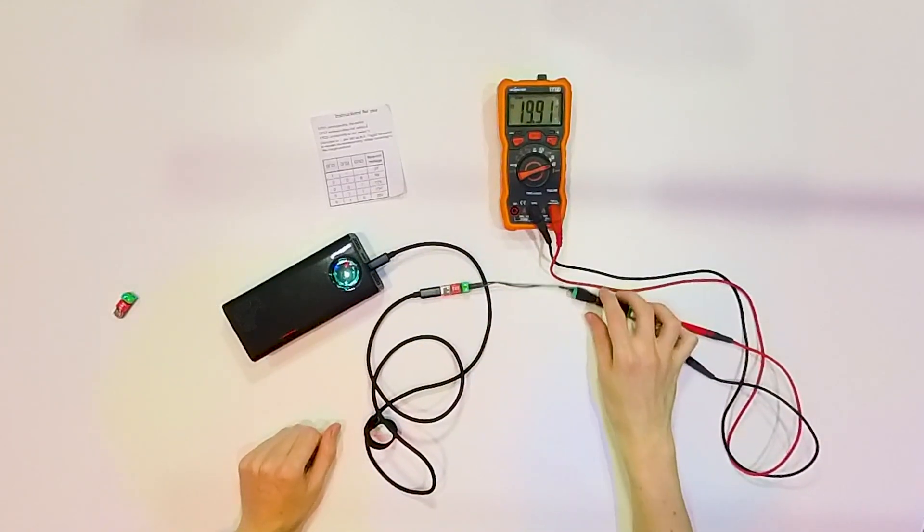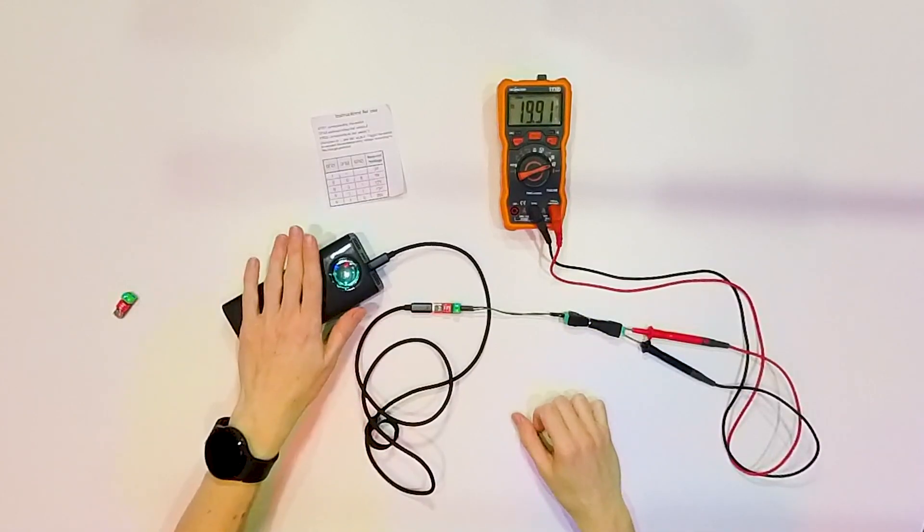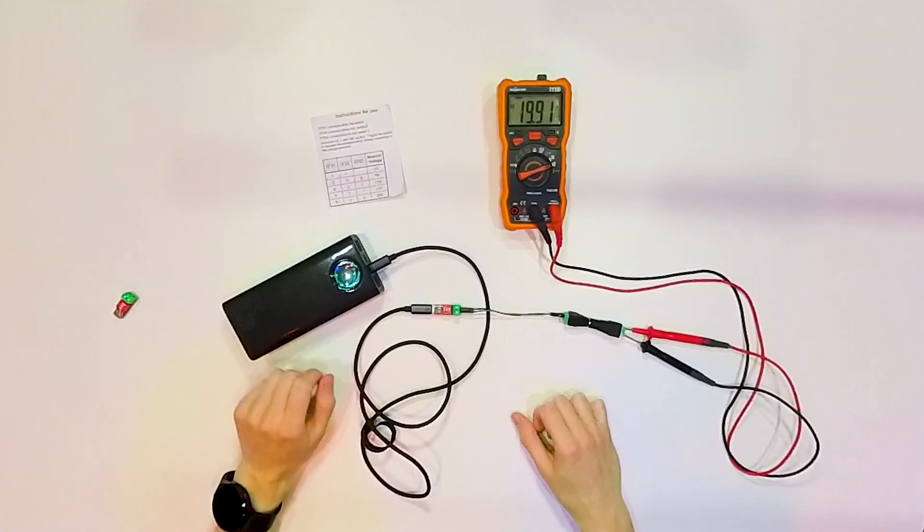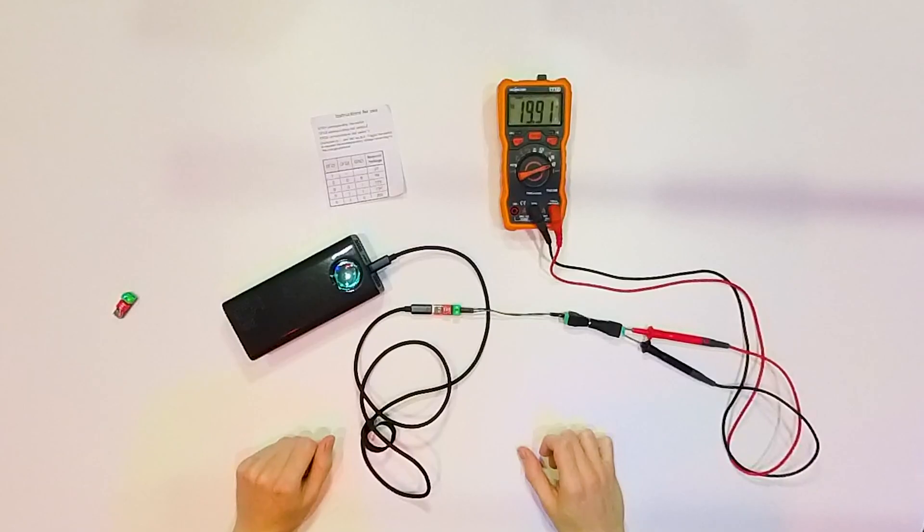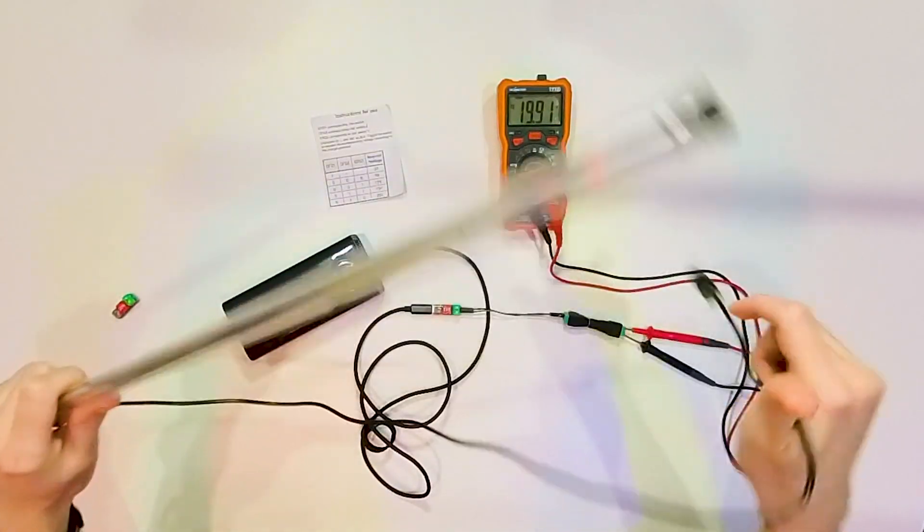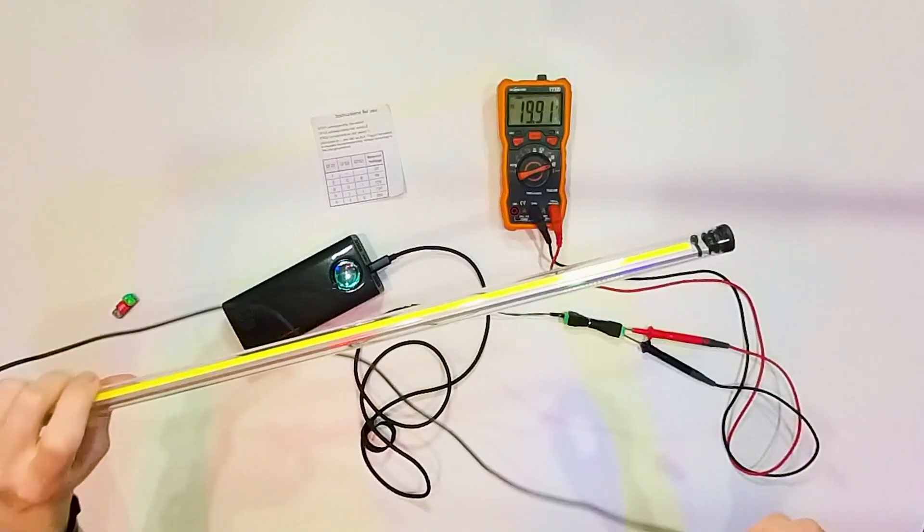So with this little device, I can power with my power bank any device that needs 5V, 9V, 12V, 15V or 20V. For example, I have this LED lamp, and this needs 12V.